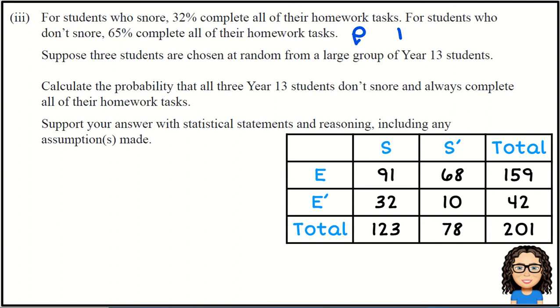Then the next bit of information: for students who don't snore, so given that they don't snore, the chance that they complete their homework is 65 percent. And we want to know—we've got three students are going to be chosen, and I'll come back to that three in a moment.